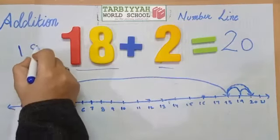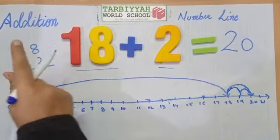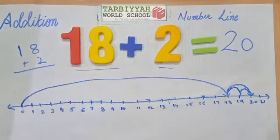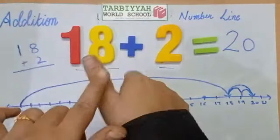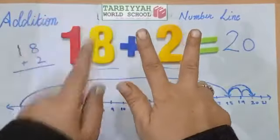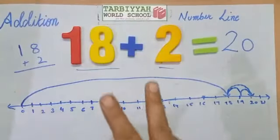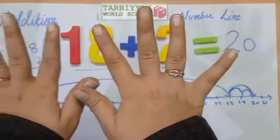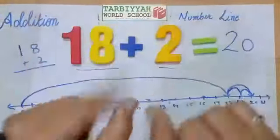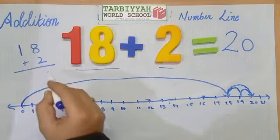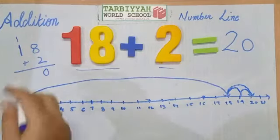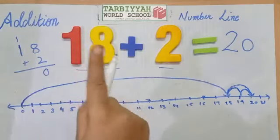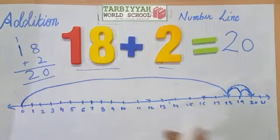18 plus 2: see here — 8, and how many digits do we have to add? 2. So: 1, 2. These are 10, so we write 0 and carry 1. Then 1 plus 1 equals 2. So what do we get? 20. Our answer is correct.